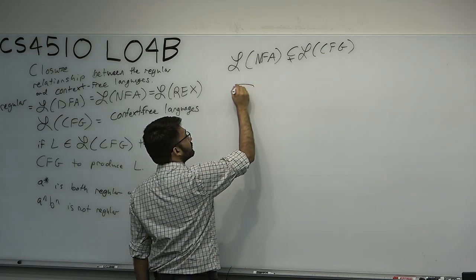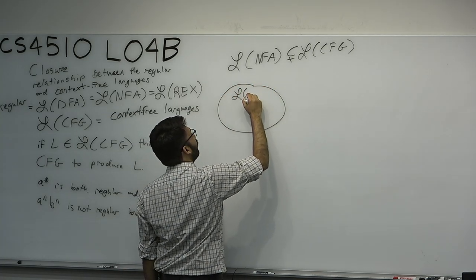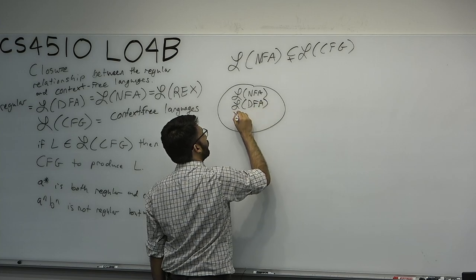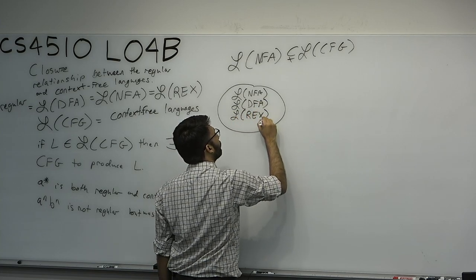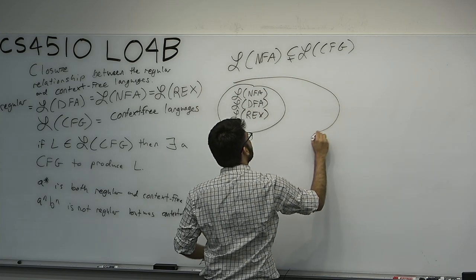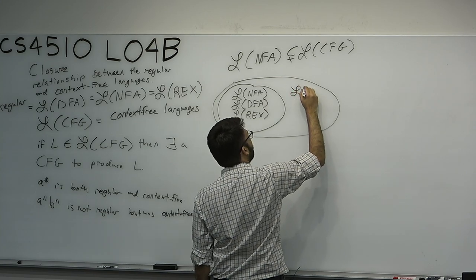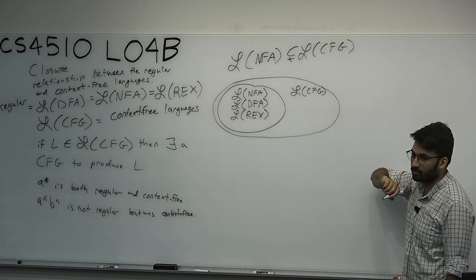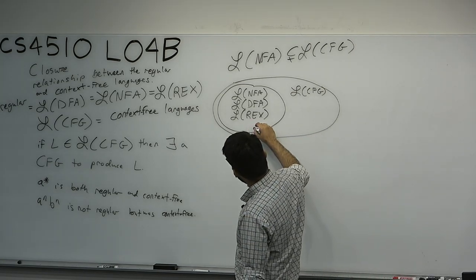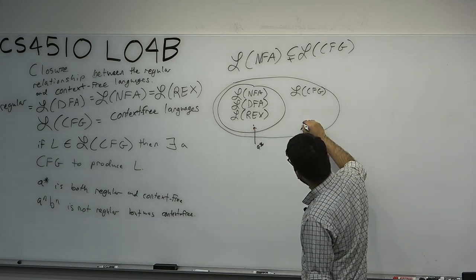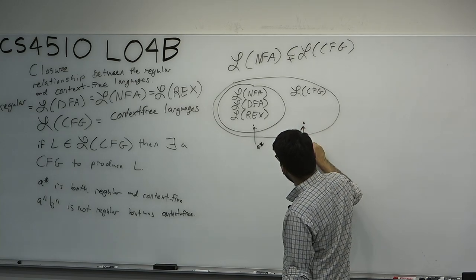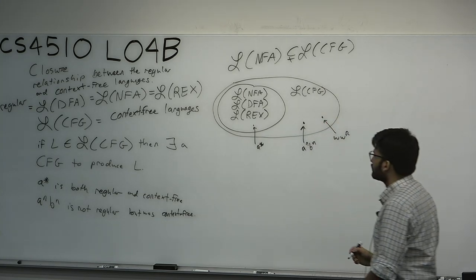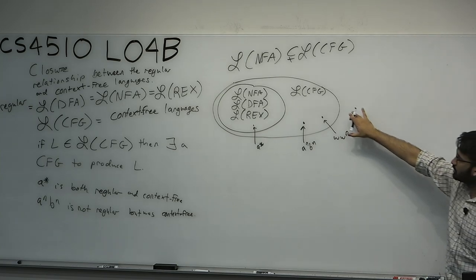So what we're going to prove is that every regular language is context-free strictly. That means L_NFA, L_DFA, and L_regex are all contained within the context-free languages — a superset. In the Venn diagram, A* sits in the intersection, while A^n B^n, WW^R (even palindromes), and so on are examples of languages which are context-free but not regular.